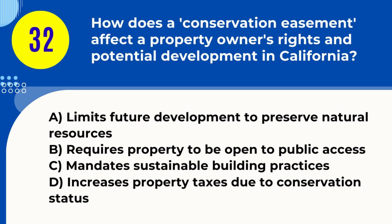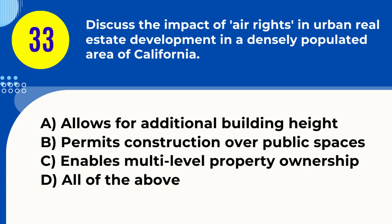Question 32. How does a conservation easement affect a property owner's rights and potential development in California? A. Limits future development to preserve natural resources B. Requires property to be open to public access C. Mandates sustainable building practices D. Increases property taxes due to conservation status. Answer: A. Limits future development to preserve natural resources. Explanation: A conservation easement in California typically limits development on the property to preserve environmental or historical resources.